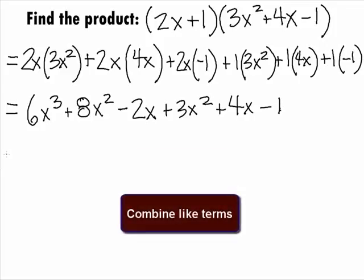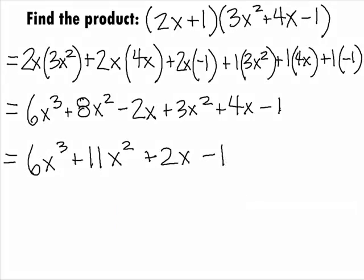It looks like we have some like terms. So, combining like terms, we get our final answer of 6x cubed plus 11x squared plus 2x minus 1. That's what we want to do.